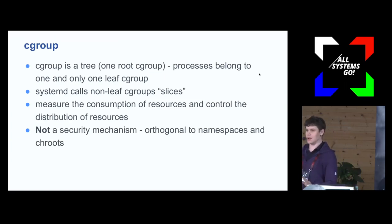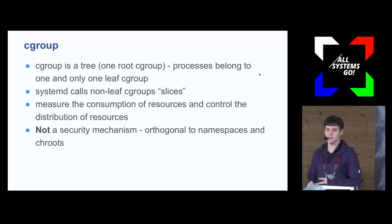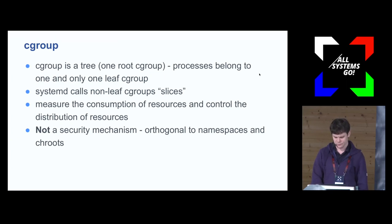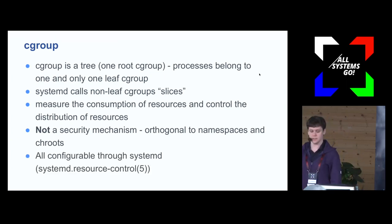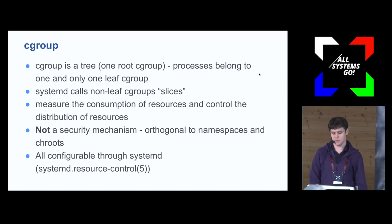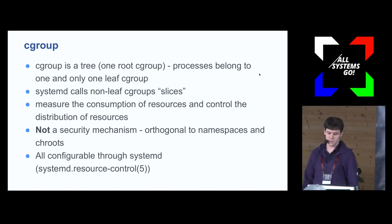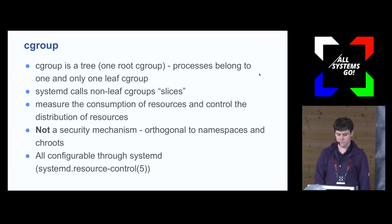Cgroups are not a security mechanism — they're totally orthogonal to namespaces and chroots, though to construct containers we use both. This is all configurable through systemd; I recommend you look at the systemd resource control man page. I'll refer to kernel cgroup mechanism names, which usually have a one-to-one mapping to systemd configuration.